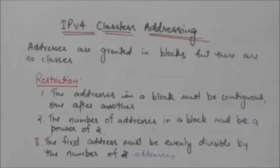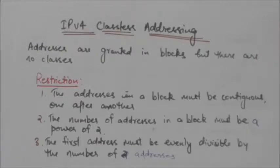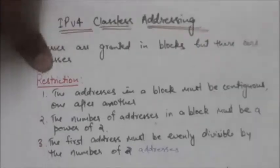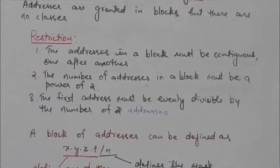For example, a household may be given only two addresses, whereas a large organization may be given thousands of addresses. The internet authorities impose three restrictions to simplify the handling of addresses.